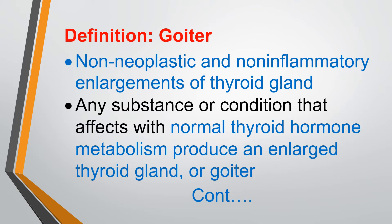The definition of goiter: there is enlargement of the thyroid gland, and these enlargements are characteristic — non-neoplastic and non-inflammatory. Generally enlargements are either due to tumour or inflammation, but here the enlargement is due to hyperplasia of the thyroid gland. Any substance or condition that affects normal thyroid hormone metabolism produces an enlargement of the thyroid gland, and that is called goiter.